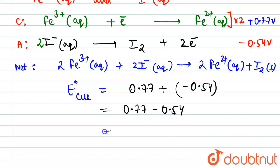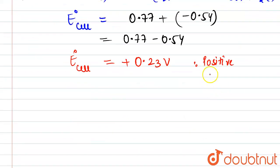This is the net E naught of the cell. Since the E naught of the cell is overall positive, we can say that the reaction between the two is feasible. So this reaction will take place.